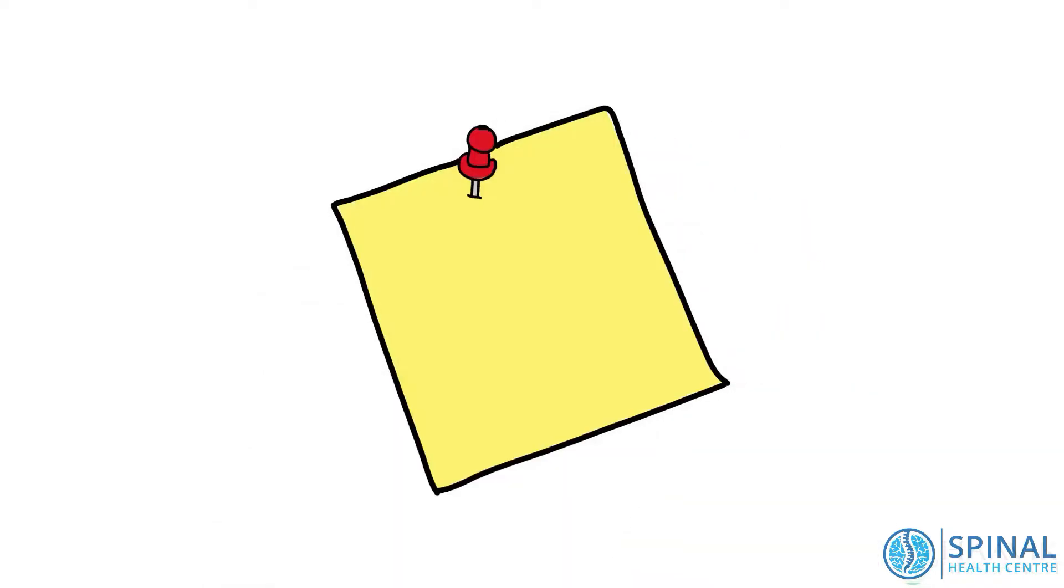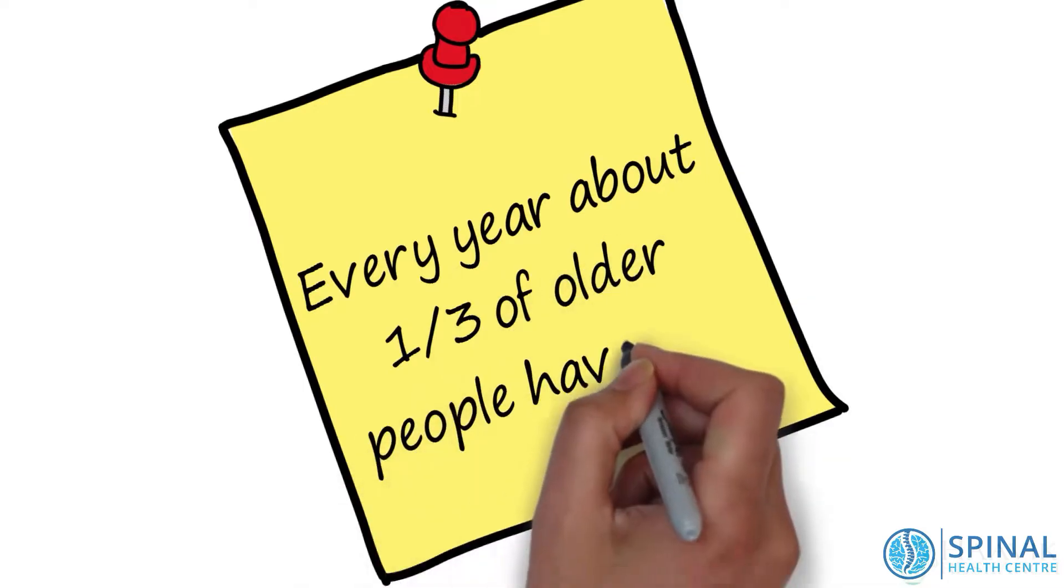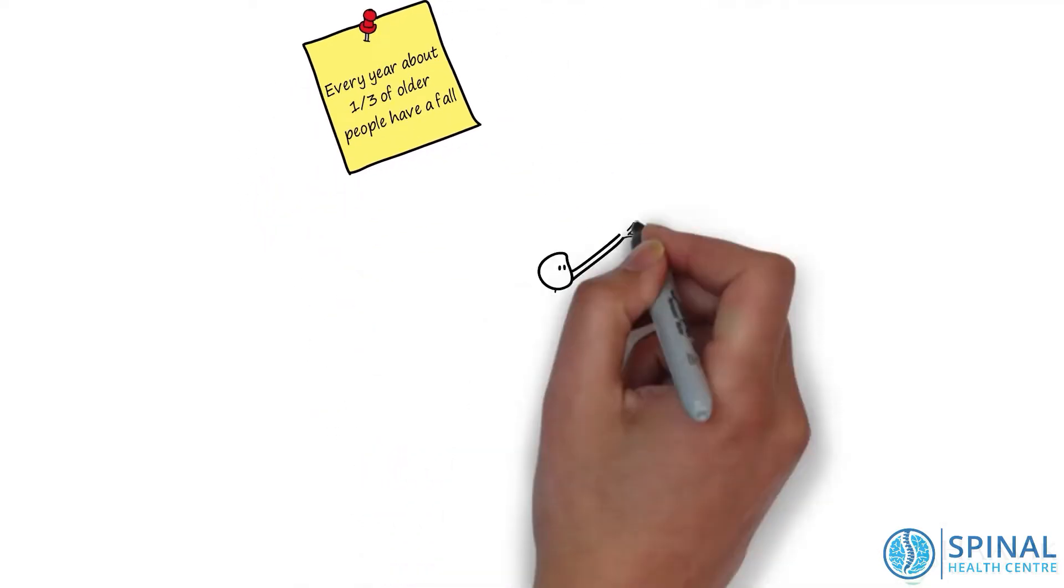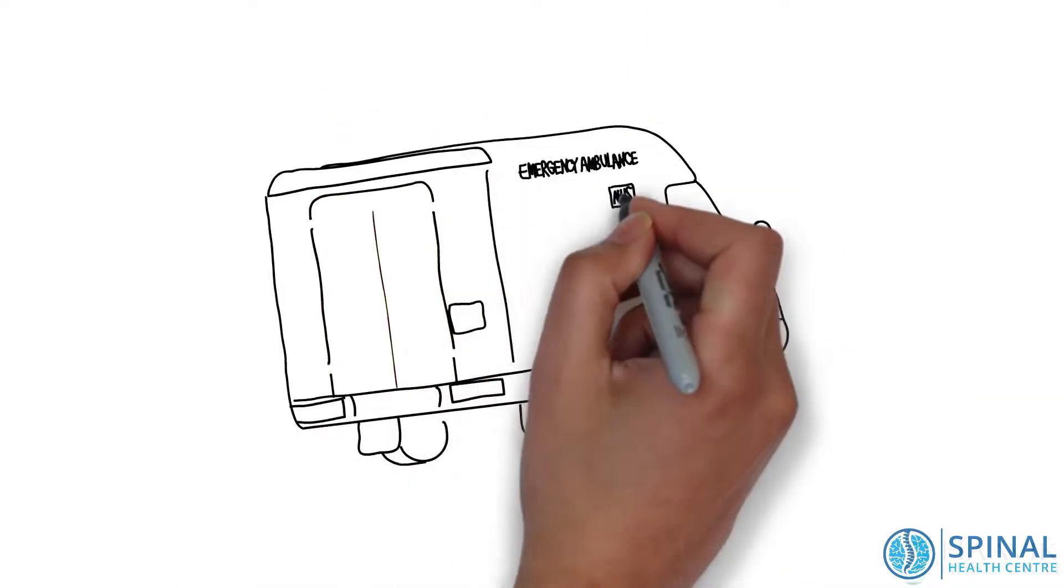As we age, our risk of having a fall increases. Every year about one-third of older people have a fall. Falls are the leading cause of injury-related hospital admissions and deaths in older people, so they're a major problem.